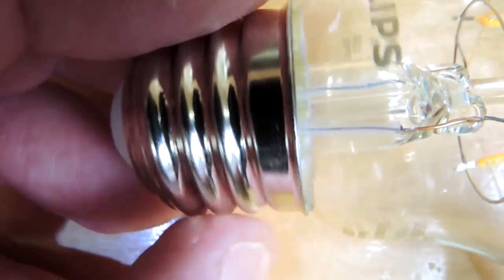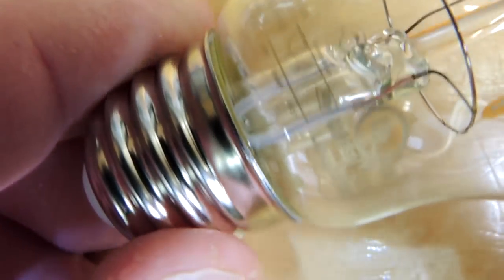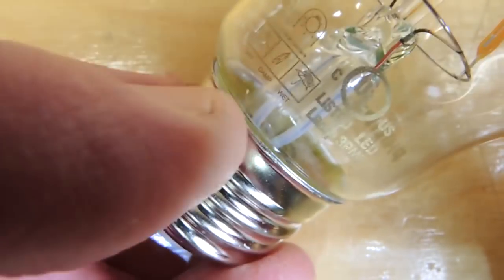One nice little feature is some really beautiful pad printing with the Philips logo in gold. And then the information on the ratings of the bulb and where you can use it. And, of course, the UL listing mark. So really attractive manufacturing on this bulb. Very pretty.